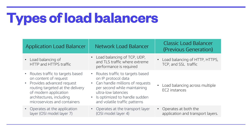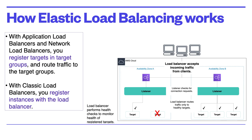So how does Elastic Load Balancing work? A load balancer accepts incoming traffic from clients and routes requests to its registered targets, such as Amazon EC2 instances, in one or more availability zones. You configure your load balancer to accept incoming traffic by specifying one or more listeners. A listener is a process that checks for connection requests, configured with a protocol and port number for connections from clients to the load balancer, and similarly for connections from the load balancer to the target.